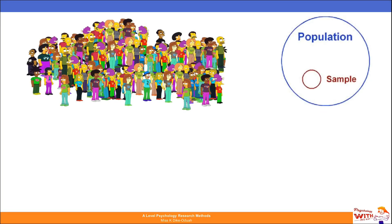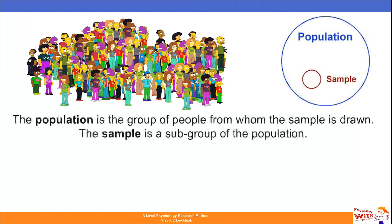You have the general population — the big circle here represents the whole population, so for example it might represent the entire United Kingdom. A sample is a subset of the population. The population is the group of people from whom the sample is drawn, and a sample is a subgroup of the population.